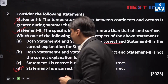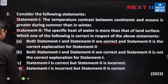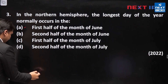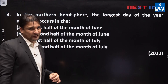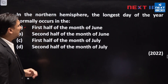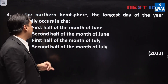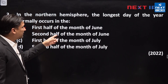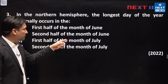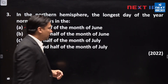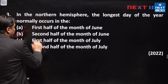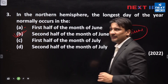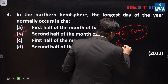Now the third question is related to the length of day and night. In the northern hemisphere, the longest day of the year normally occurs in: first half of June, second half of June, first half of July, or second half of July. The correct answer is the second half of June — specifically on 21st June, when sun rays fall vertically over the Tropic of Cancer. This is called the summer solstice.